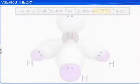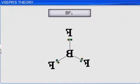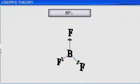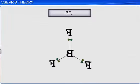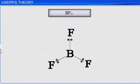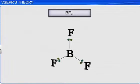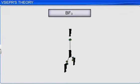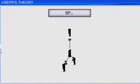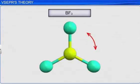The valence electron pairs surrounding the central atom in a molecule mutually repel each other. Thus, these electron pairs surrounding the central atom arrange themselves in space in such a way to minimize the repulsions, giving the molecule a definite geometry.